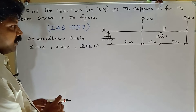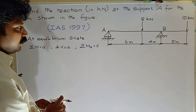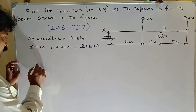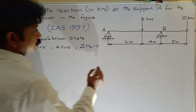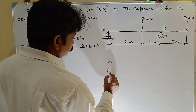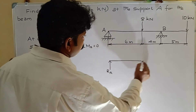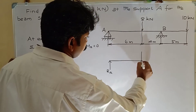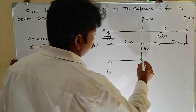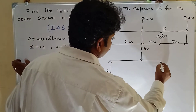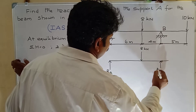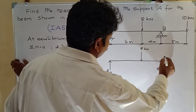Before applying the conditions, draw the free body diagram of the beam. Roller support offers only one reaction RA, and hinge support offers two reactions: one vertical RB_V and one horizontal RB_H.